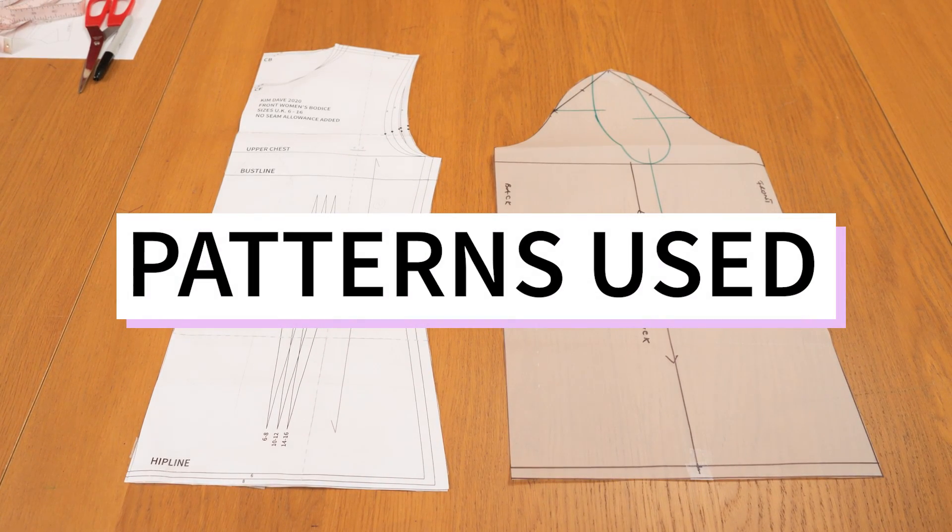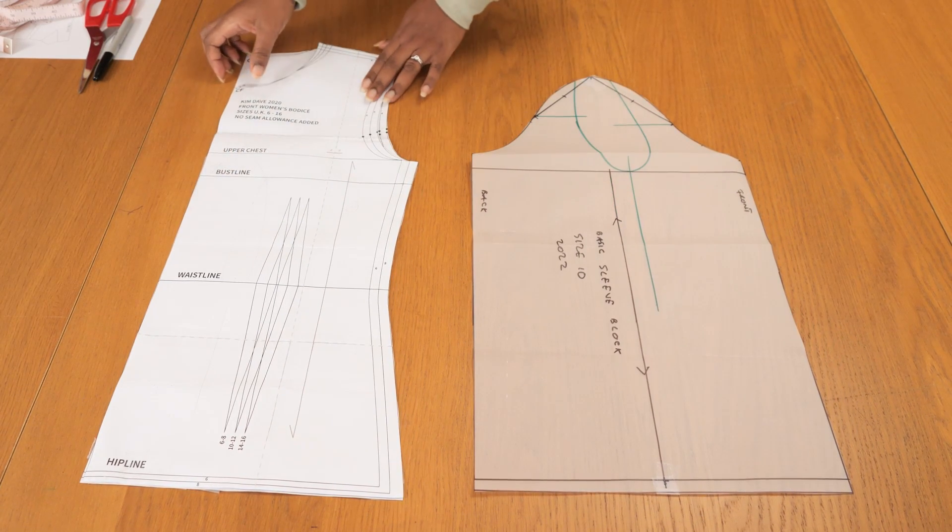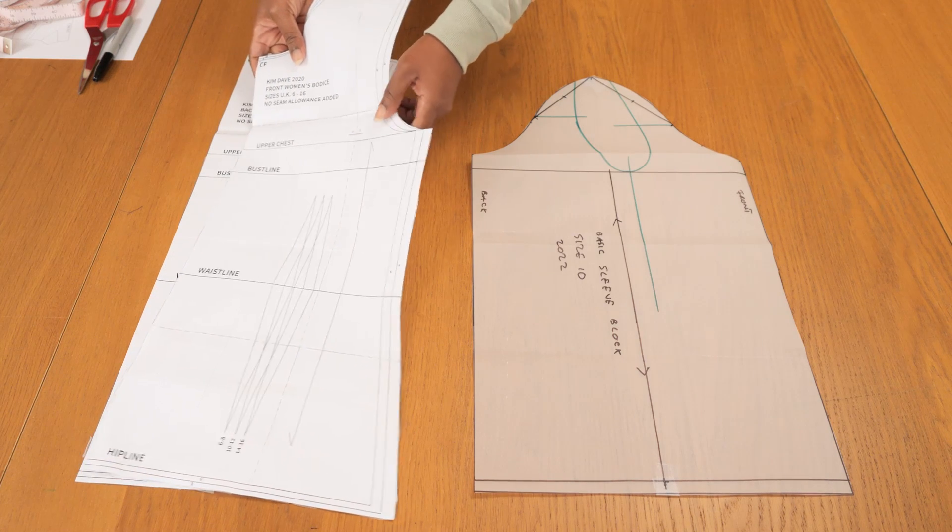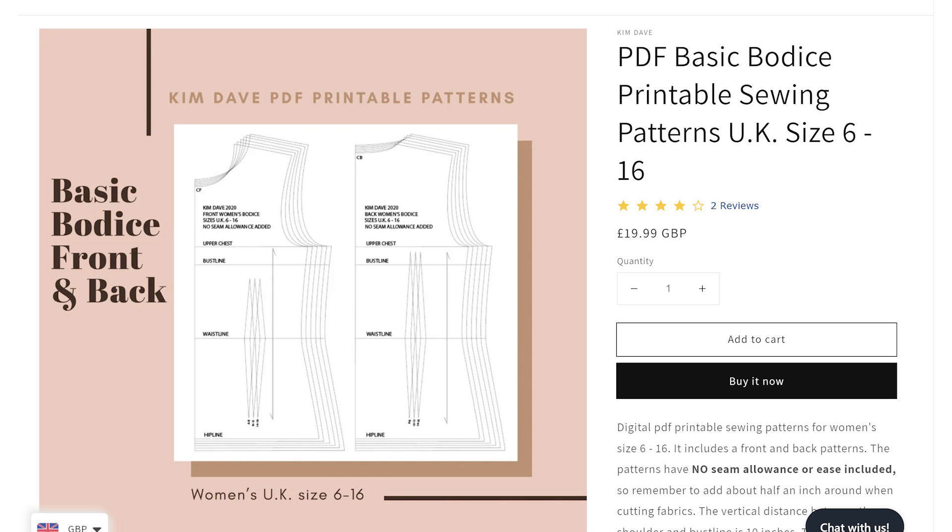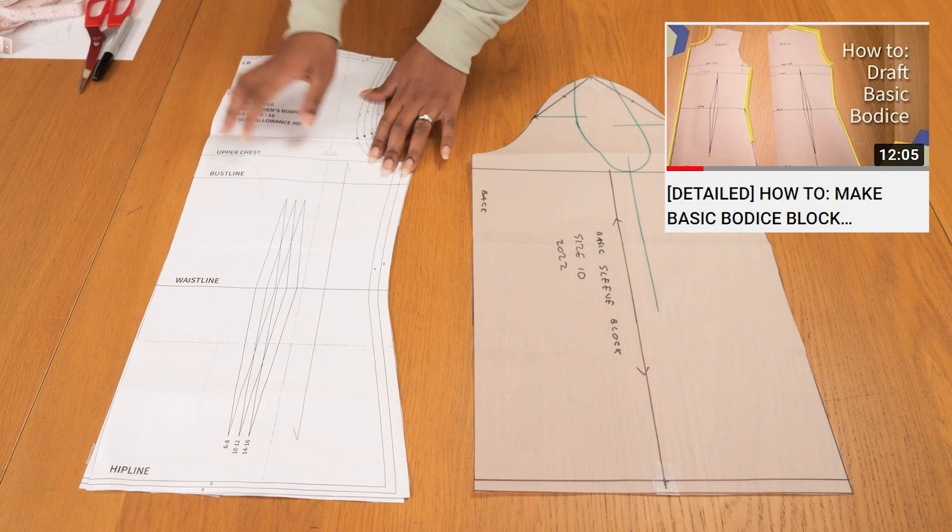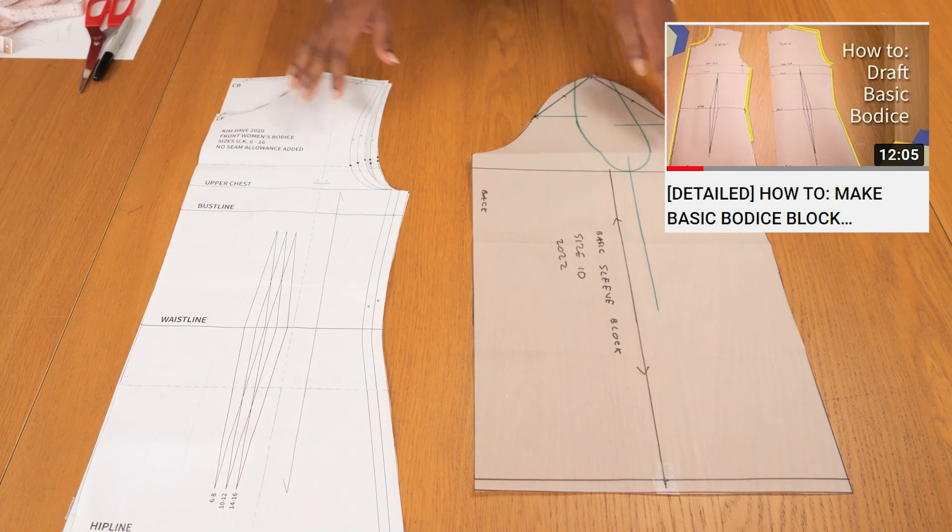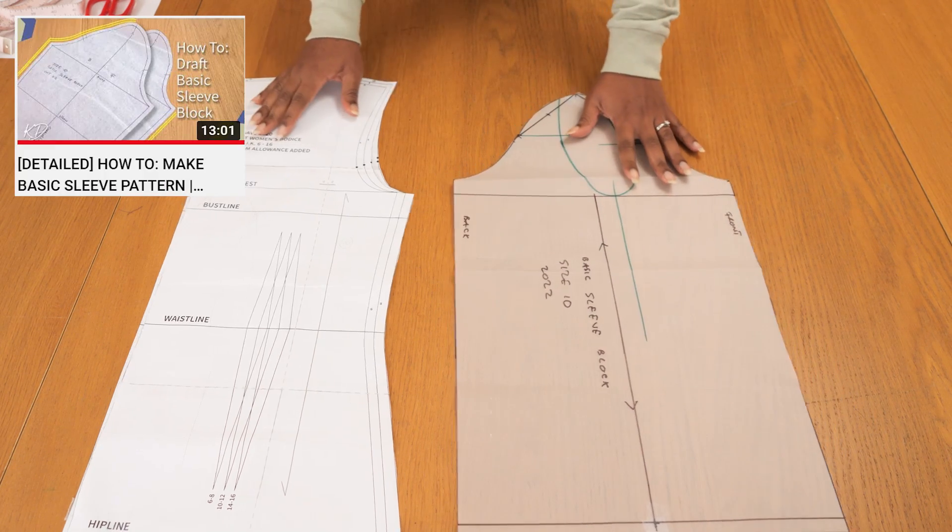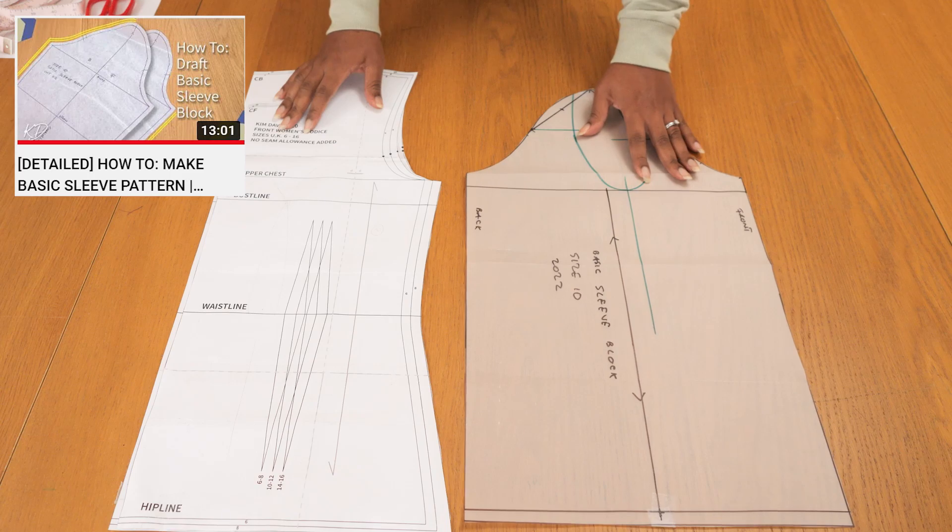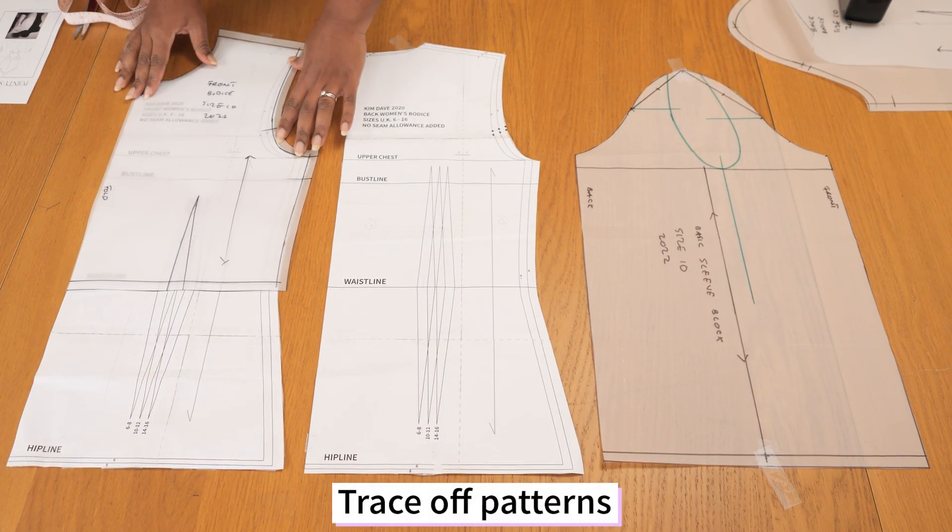I'm going to start off by working with the following patterns. I have my basic bodice, the front and the back. This one is the graded version which I have available on my store and goes from size 6 to 16. I'm going to be working with a UK size 10 today. However, I have a dedicated tutorial on how to make a basic bodice block if you don't have one for yourself already.